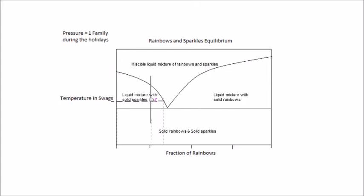The composition of the liquid phase can be read from the intersection of the tie-line with the curve. In the liquid mixture, the composition of rainbows is about 0.3, and that of sparkles is about 0.7. Our overall composition of 25% rainbows and 75% sparkles remains the same.